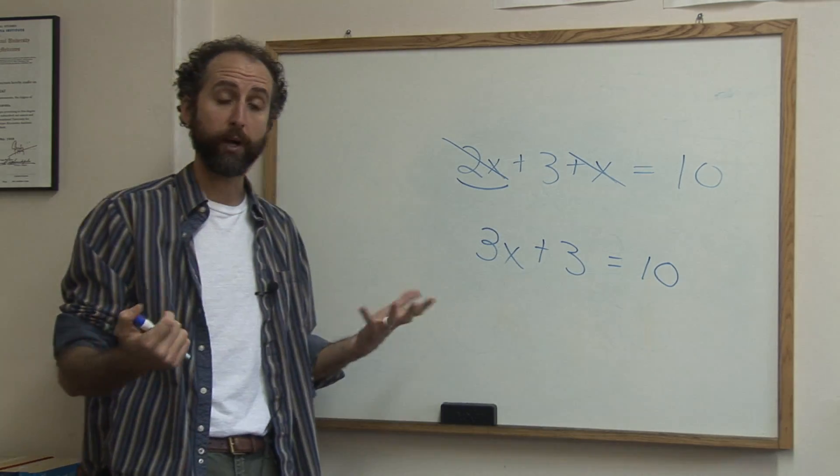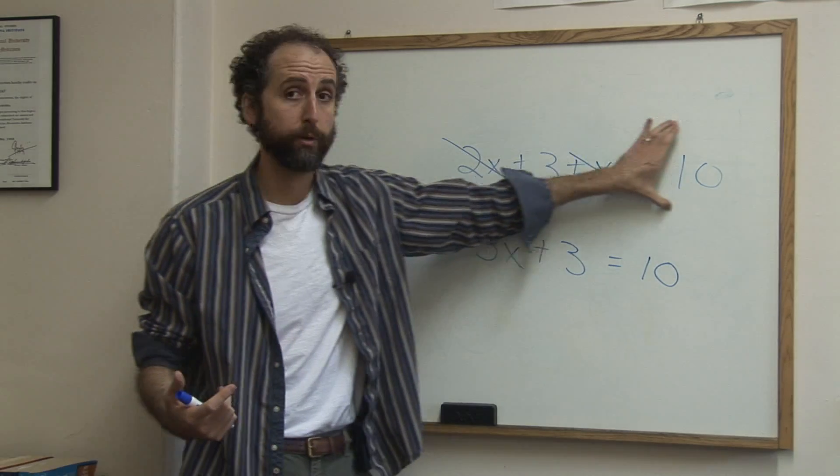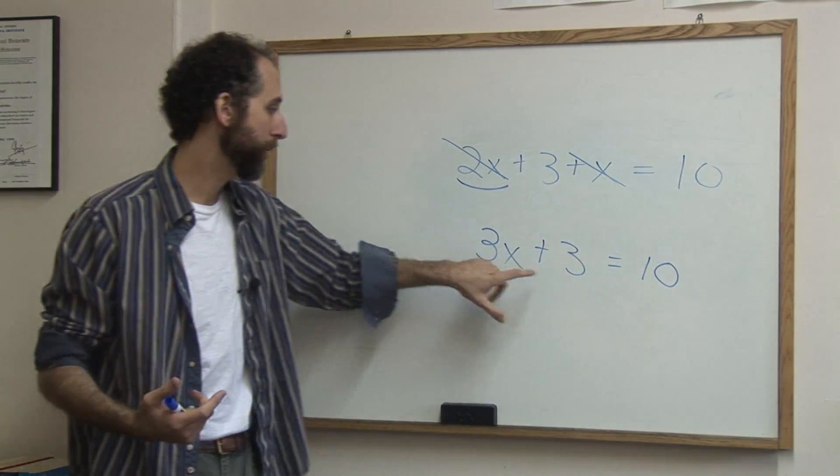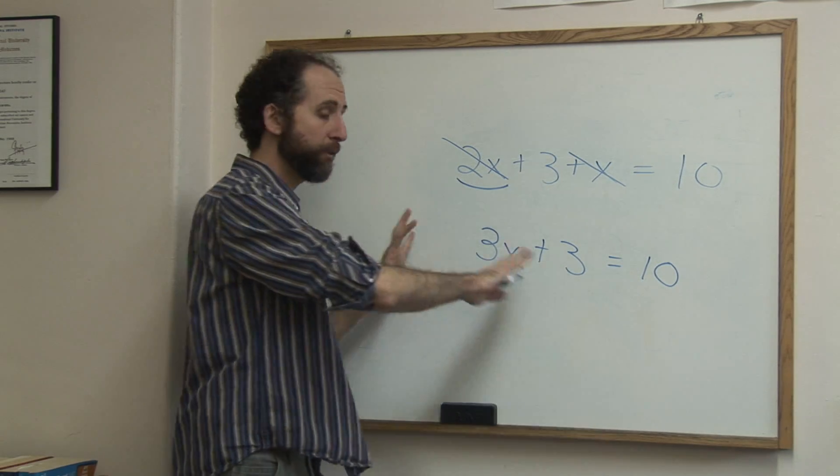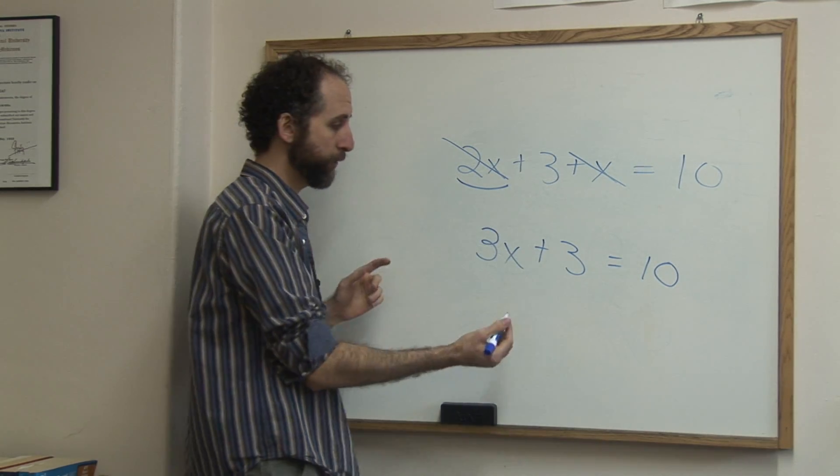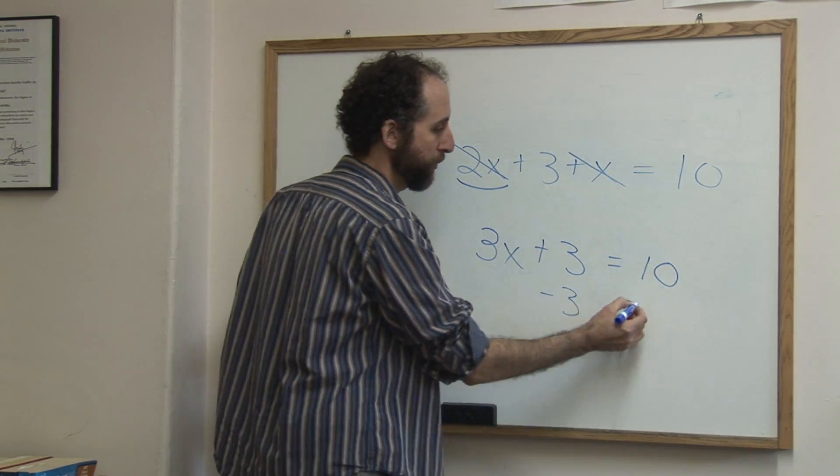Again we want to solve for x, we want to get it alone. So after we collect like terms, that's the first step, we're now going to get x alone. So to get x alone, we're going to eliminate everything from around it. So first thing we're going to do is subtract 3 from both sides.